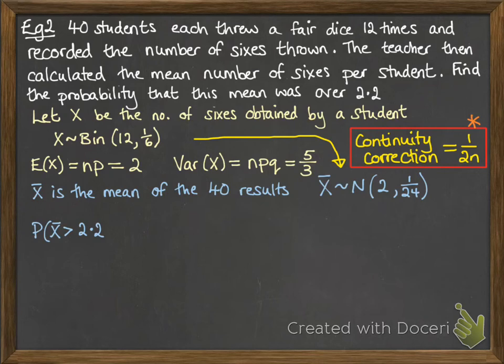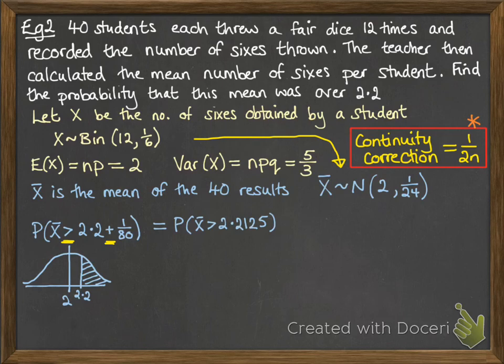Now we're working out the probability that our mean is more than 2.2, so since we're going for more than and not equal to, we want to add on that 1/80 continuity correction. Remember, n is 40 and we're doing 1/(2n) for the continuity correction. We're finding that area there, and since we want to go to the right of that line, we need 2.2 to not be included because we're doing strictly greater than, so we need to add on that continuity correction. If we'd wanted equal to, we would have subtracted it to make sure 2.2 got included.